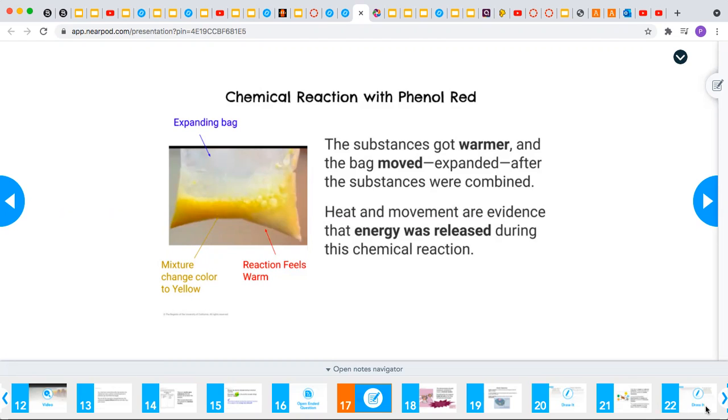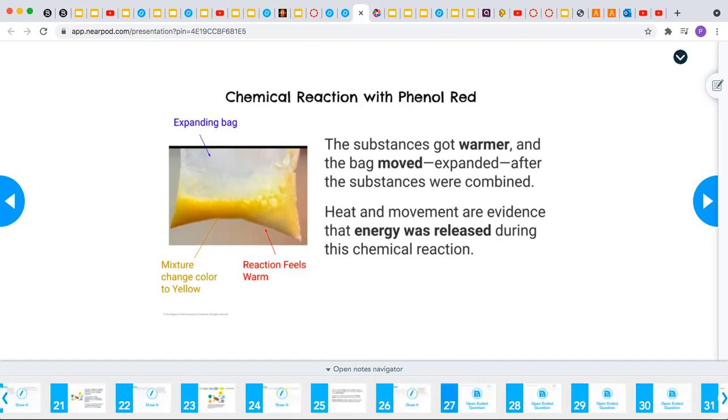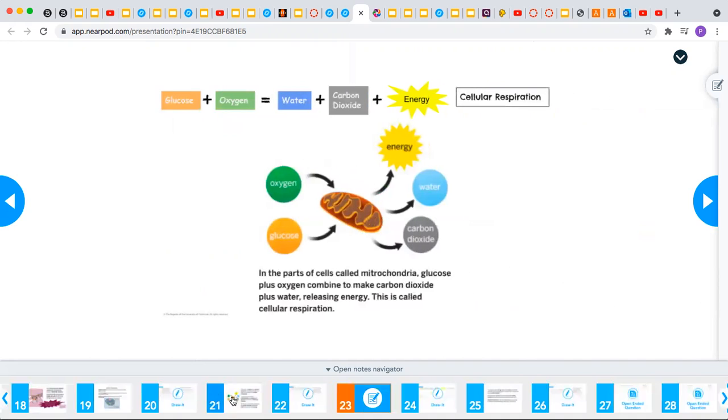Some of the things that they had in common was that new substances were made as well as there was energy that was released. So because the bag felt warm, we know that energy was released. When we look at cellular respiration, inside the cells of the body, we have these mitochondria where oxygen and glucose combine and the substances that are made are carbon dioxide and water that's released from the cell. And so is energy.